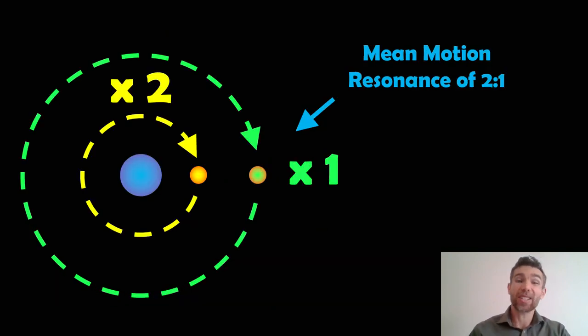This would be a mean motion resonance of two-to-one. You can get all sorts: three-to-two, four-to-one, and you can get chains of them occurring as well. It doesn't have to be just two bodies. If you have more than two, say three or four, that would be known as a Laplace resonance. You end up with a Laplace chain as a form of mean motion resonance.